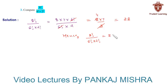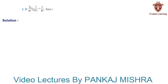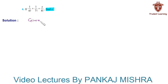Hence the value of 8! over (6! × 2!) is 28. This completes our solution. The next problem: if 1/6! + 1/7! = x/8!, find x.